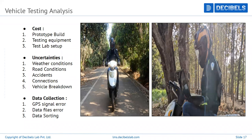If it rains or is cloudy, GPS won't work, causing GPS signal errors and failed data collection. You might have tested for 15 kilometers but that data won't be collected due to weather conditions. Road conditions also cause issues — bad roads can break connections in the data acquisition system, whether via USB, SD card, Bluetooth, or Wi-Fi. In extreme cases, vehicle breakdowns can occur.